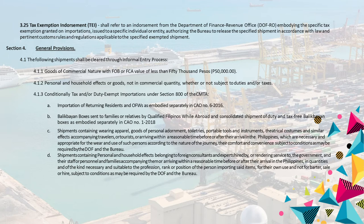A. Importation of returning residents and OFWs as embodied separately in CAO No. 6-2016. B. Balikbayan Boxes sent to families or relatives by qualified Filipinos while abroad and consolidated shipment of duty and tax-free Balikbayan Boxes as embodied separately in CAO No. 1-2018. C. Shipments containing wearing apparel, goods of personal adornment, toiletries, portable tools and instruments, theatrical costumes and similar effects accompanying travelers or tourists or arriving within a reasonable time before or after their arrival in the Philippines, which are necessary and appropriate for the wear and use of such persons according to the nature of the journey, their comfort and convenience, subject to conditions as may be required by the DOF and the Bureau.